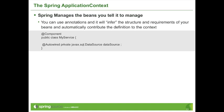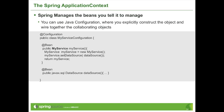A different approach is to use a configuration class. A @Configuration class is like a superset of @Component — it can benefit from all the same services and use cases. Additionally, Spring will look at any class annotated with @Configuration and find all methods annotated with @Bean, then invoke each method one by one and register the return value with the application context.